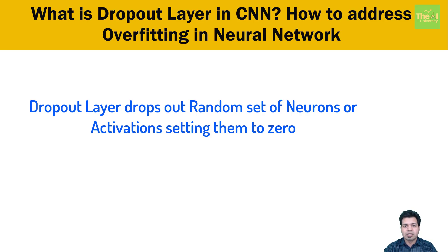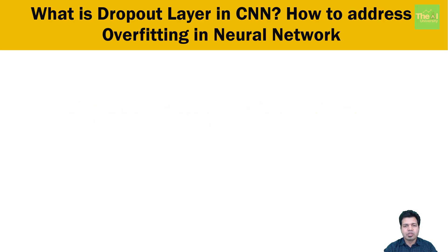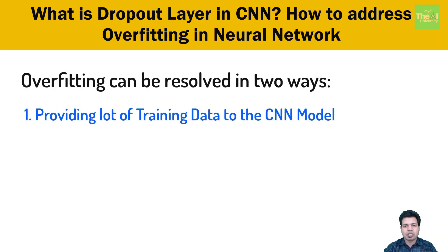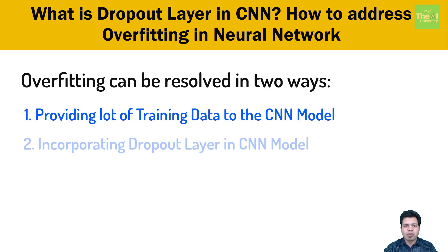When we provide new unseen or test data, the model performs very badly — resulting in the overfitting problem. Convolution neural networks are very notorious when it comes to overfitting. There are two ways to resolve this: number one, providing a lot of training data to the CNN model so it can train itself in a more generalized way; number two, incorporating a dropout layer. Since this video is about the dropout layer, we will focus on the dropout regularization technique only.